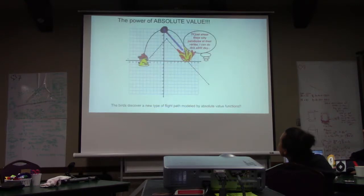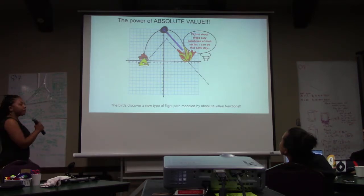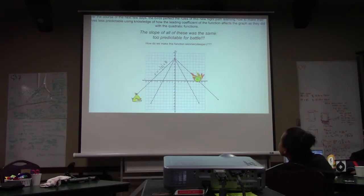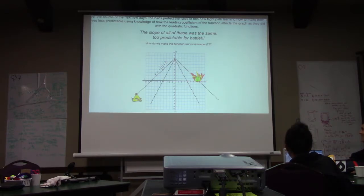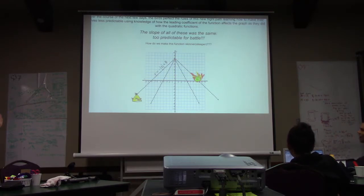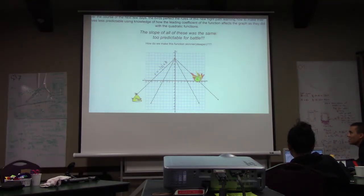The power of absolute value: the birds discover a new type of flight path modeled by absolute value functions. Over the course of the next few days, the birds perfect the rules of this new flight path, learning how they can make their flight less predictable. The leading coefficient of the function affects the path the same way as quadratic functions — which is why I teach absolute value alongside quadratic functions.